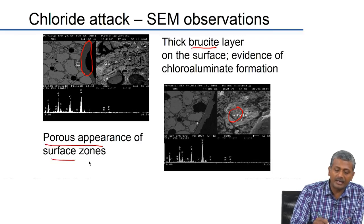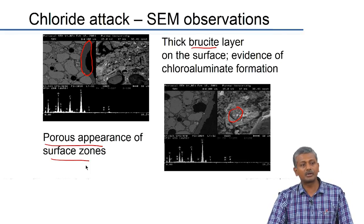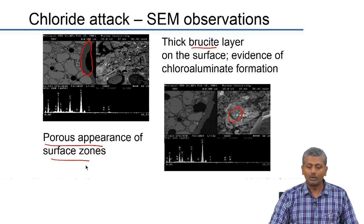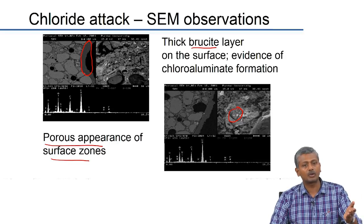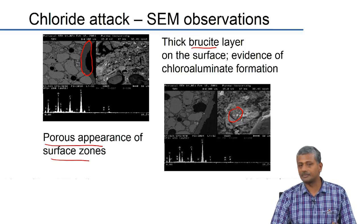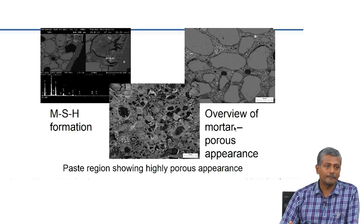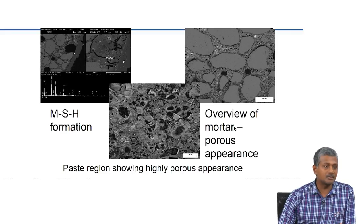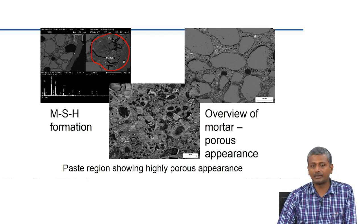Chloride attack can increase the porosity of surface zones by leaching out calcium hydroxide — removing a solid product and creating porosity inside. Most products of chloride attack are soluble: if calcium hydroxide reacts with chloride it forms calcium chloride, which is highly soluble and gets removed from the system. In sulphate attack, calcium hydroxide reacting with sulphate forms gypsum, which is not easily soluble and remains as deposits. In magnesium chloride attack, apart from the increase in porosity, there is also alteration of the surface and conversion of CSH into magnesium silicate hydrate — this happens wherever you remove calcium from the CSH, whether by magnesium or by acid.